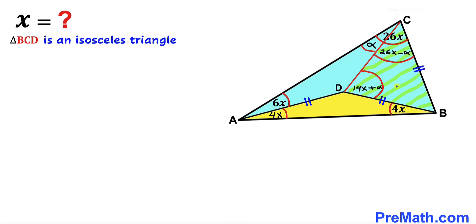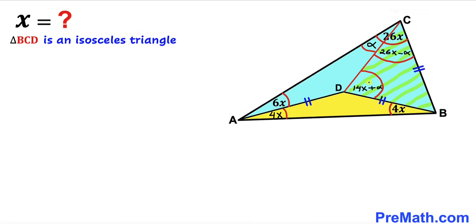Now let's focus on triangle BCD. We know this is an isosceles triangle since side BD equals side BC. Therefore the base angles must be equal, so we can equate: 14x plus alpha equals 26x minus alpha.